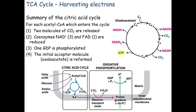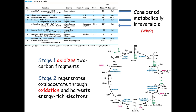Those electrons represented by all the NADHs and FADH2s will ultimately be sent down the electron transport chain — but that's for next time. Let's get into the eight steps of the citric acid cycle. There are eight steps, compared to ten in glycolysis. The picture in the bottom right is about 75% of what you need to know for the citric acid cycle. If you can reproduce that, you're 75% of the way there.